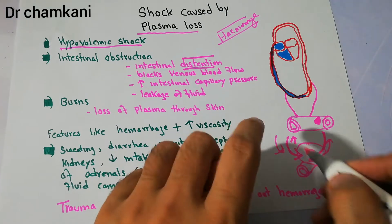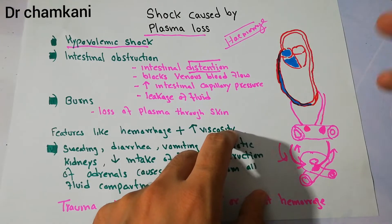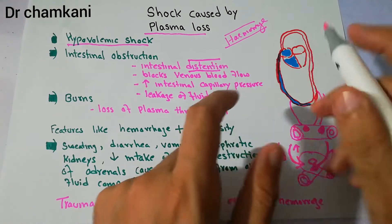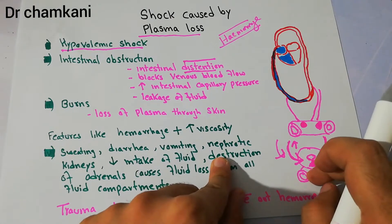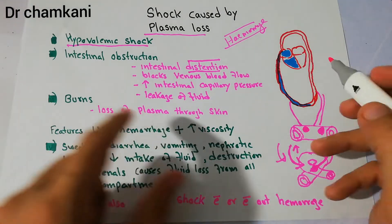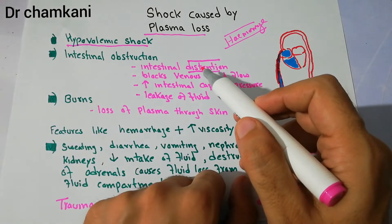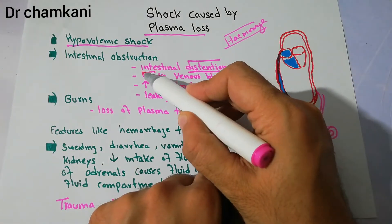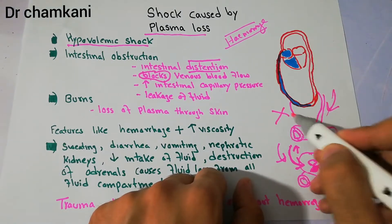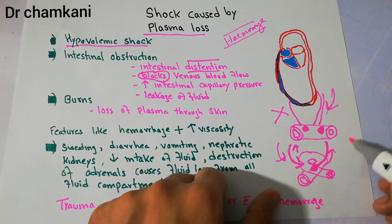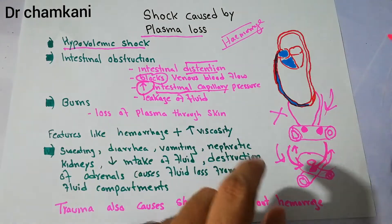The venous blood flow has been blocked. Blood is coming through the arteries and accumulating due to the obstruction. Whether caused by twisting of the intestine or a mass, the obstruction leads to distension, which blocks venous flow. Blood comes in one way but cannot return, so there is back pressure, leading to increased intestinal capillary pressure.